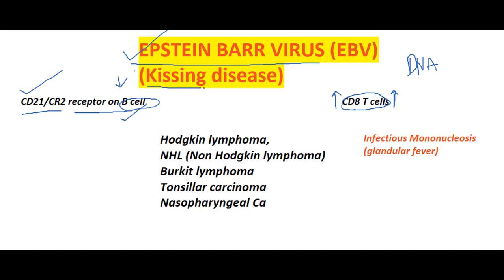EBV spreads mainly through saliva, and hence intimate kissing is required for this virus to be transmitted. This is why it is called the kissing disease.